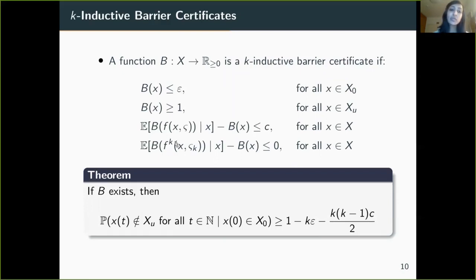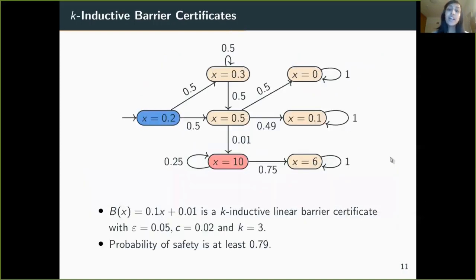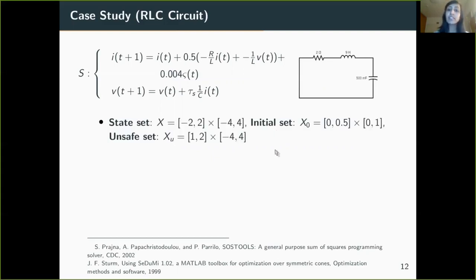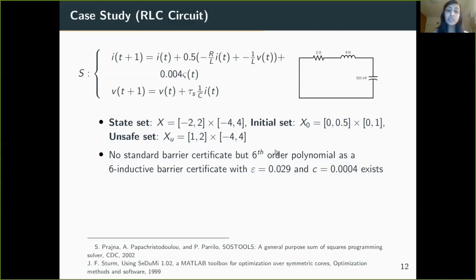We illustrate with the Markov chain example that we can in fact find a linear K-inductive barrier certificate, providing a probability of safety of at least 0.79 — significantly better than before. We also illustrate with a simple RLC circuit which requires satisfying a given safety property. In this case, no standard barrier certificate exists, but a K-inductive barrier certificate exists that provides a probability of safety of at least 0.94.